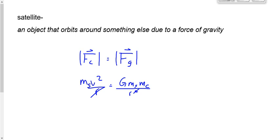You can see that ms, the mass of the satellite, cancels out. That means it doesn't matter how heavy the satellite is — what matters is its speed, the orbital radius, and the mass of the central body. The International Space Station doesn't change orbit when a new astronaut or supplies arrive because the satellite's mass cancels out of the equation.